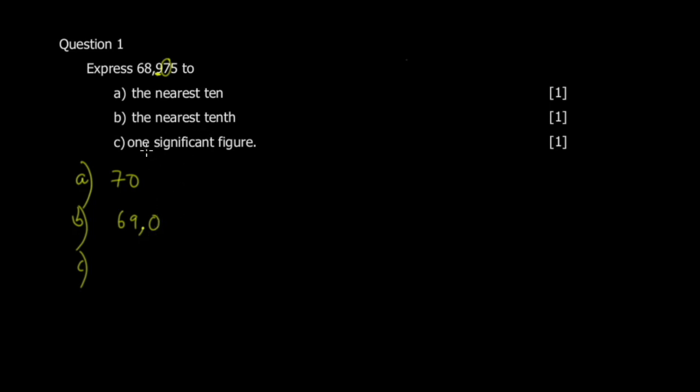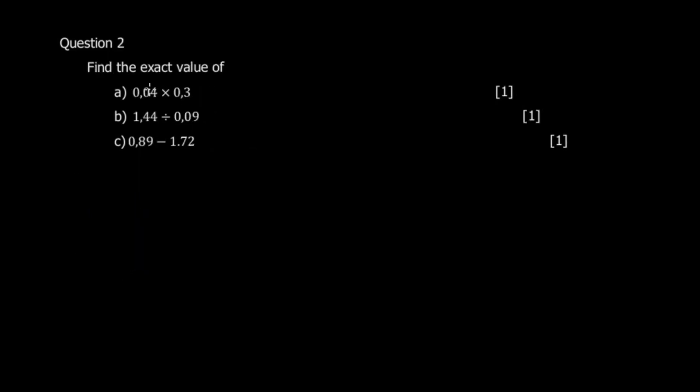To one significant figure, you first identify the first significant figure, which is this, and then you identify how the next figure influences this. This one would become 7, and we'd have 70. This zero is not significant, we put it there for math to make sense, but it's not significant.